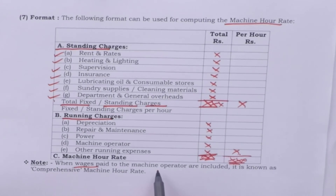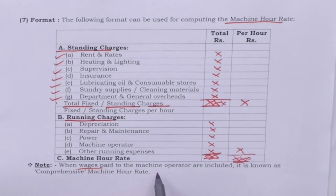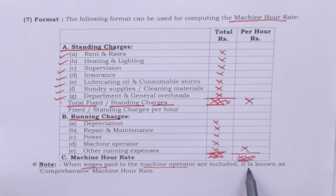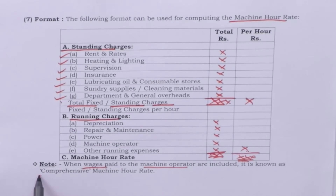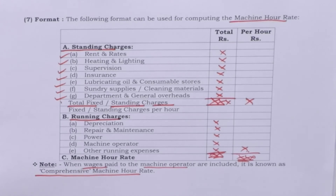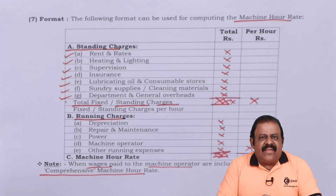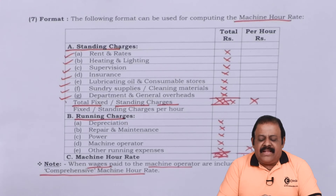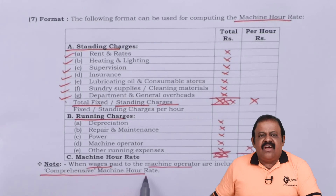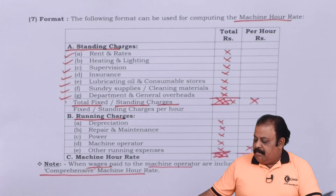When wages paid to the machine operator are included, it is known as the comprehensive machine hour rate. If we add the amount of wages paid to the operator and find out the machine hour rate, it will be called the comprehensive machine hour rate — that is what we are required to remember.